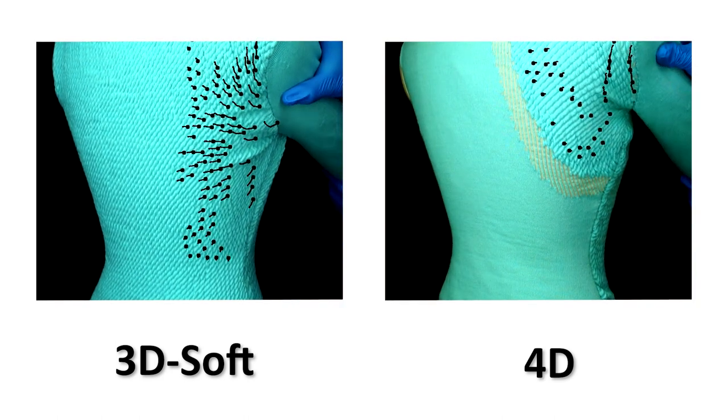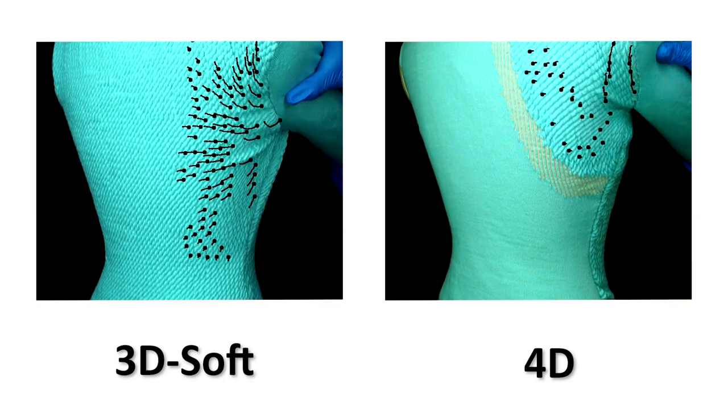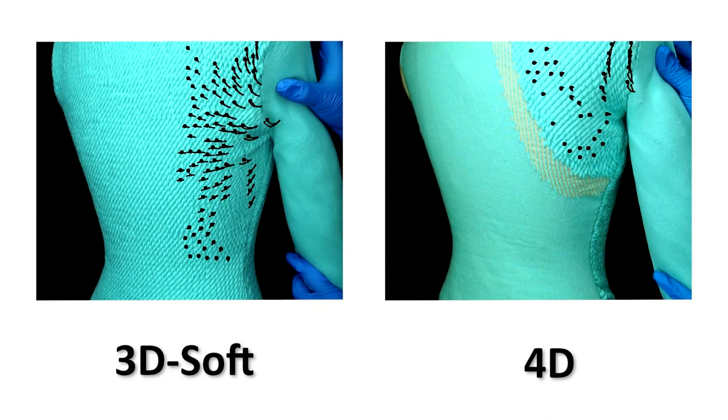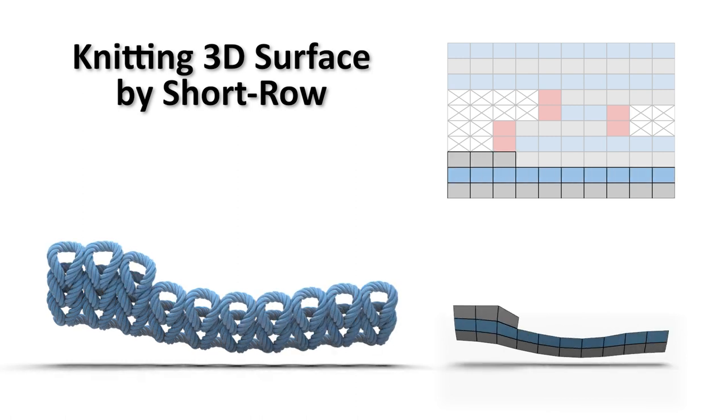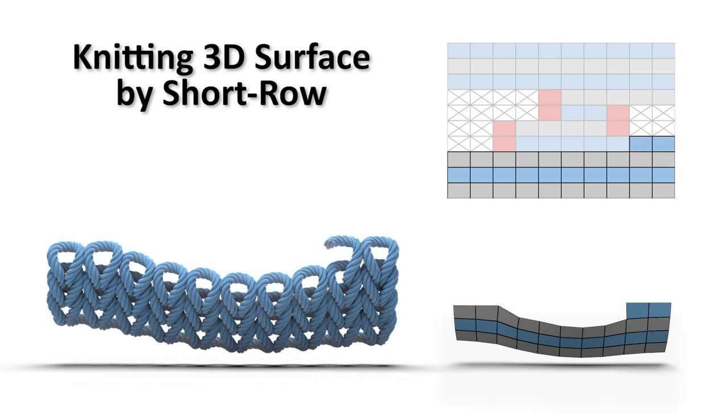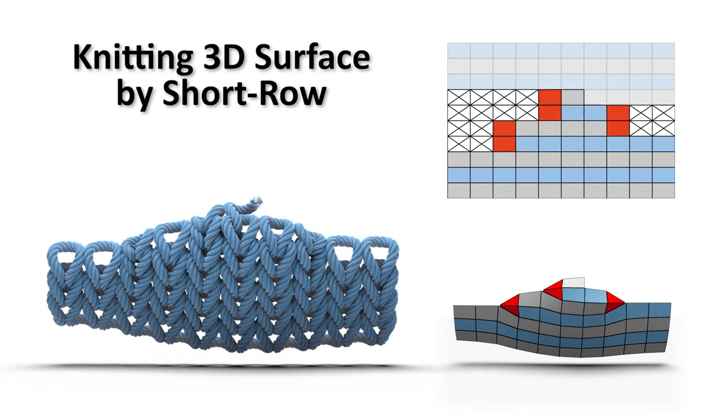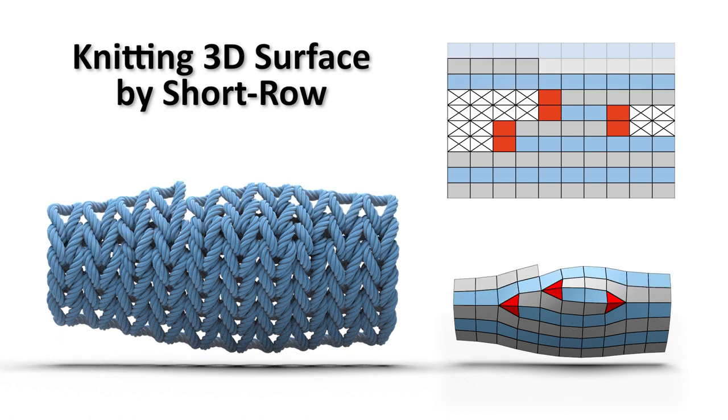We developed algorithms in this project to automatically fabricate such a 4D garment by digital knitting machines. We use two strategies in our knitting pipeline. First, short row 3D shaping is used as it is efficient and feasible for low-cost machines. Only using short row 3D shaping can reduce the knitting time by 39% on the same machine.